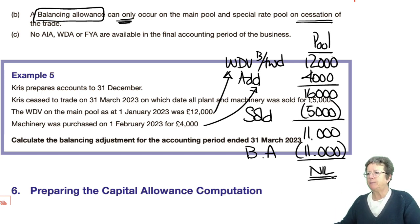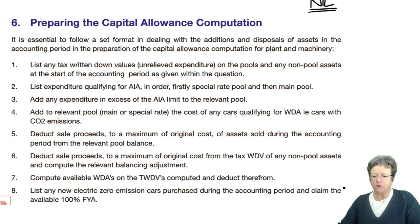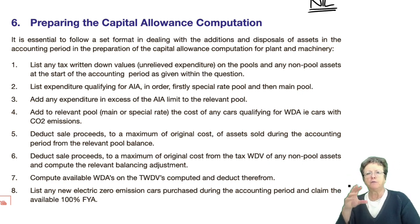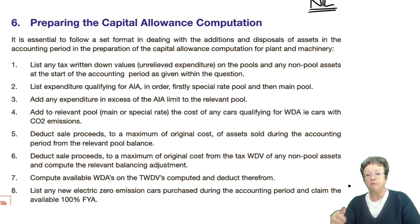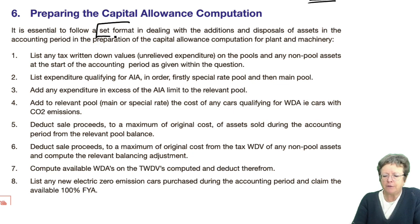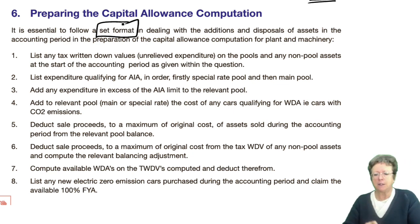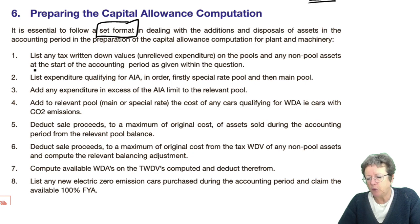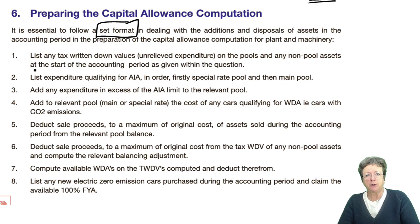Now let's review how to prepare capital allowances computations, because this is an important topic. If this question comes up in the exam, you can get a lot of marks for it — it's a chapter worth revisiting until you've got it down. Practice the questions so you're confident you can do them. Use the set format: list any tax written down values in the pools and non-pool assets at the start, given in the question, copied into the pro forma, with headings across the top.